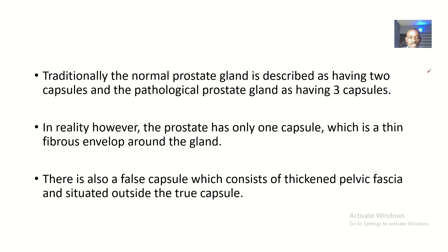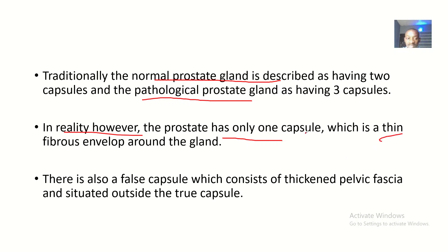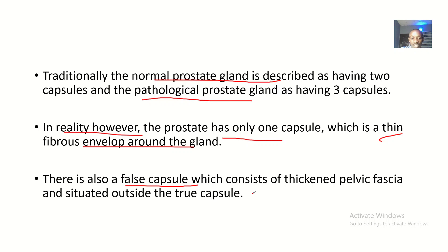Traditionally, the normal prostate gland is described as having two capsules and the pathological prostate will have three capsules. Now, in reality however, the prostate has only one capsule, which is the true capsule — a thin fibrous envelope around the gland. Anything covering outside is actually covering the true capsule, which is not really a capsule of the prostate, but we call them capsules of the prostate anyway. The false capsule consists of thickened pelvic fascia and is situated outside the true capsule.